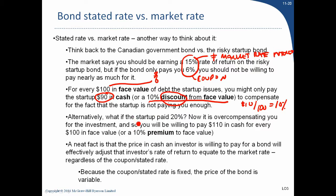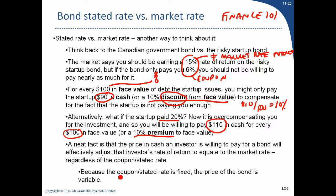Alternatively, if the startup is willing to pay 20% but the risk only warrants 15%, you'd be willing to pay more — maybe $110 for a $100 face value bond, which is a 10% premium. The price and cash the investor pays for the bond effectively adjusts the investor's rate of return to equal the market rate of interest, regardless of what the coupon is. Because the coupon is fixed, the price of the bond must be variable.